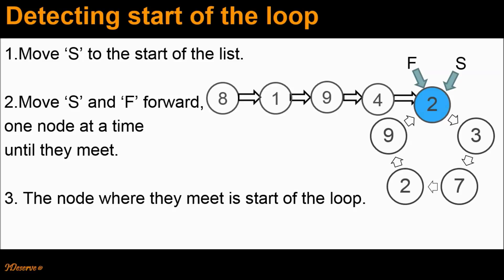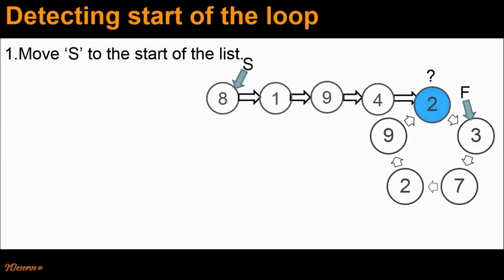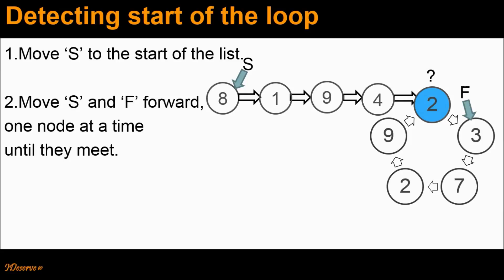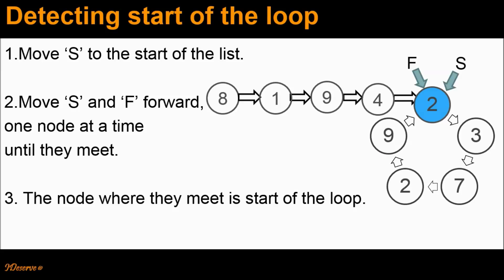Just to quickly recap this algorithm: after we detected the loop, we moved S to the start of the list. Then we moved S and F forward one node at a time until they met. At the point where they meet, we say that that is the start of the loop.